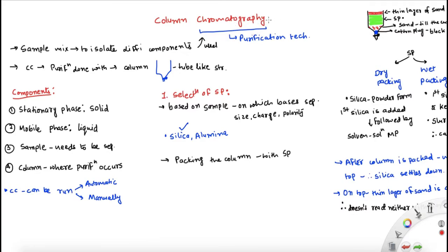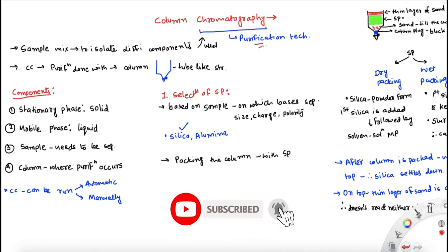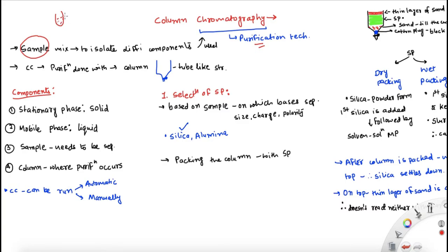The chromatography technique is a technique we use for purification of some compounds. If we have a sample where we have different molecules or different components and we want to separate these components, that's when we use chromatography. It's isolation of different components. It's a purification technique, and when it comes to column chromatography, as the term itself says, we are going to do the purification in a column.